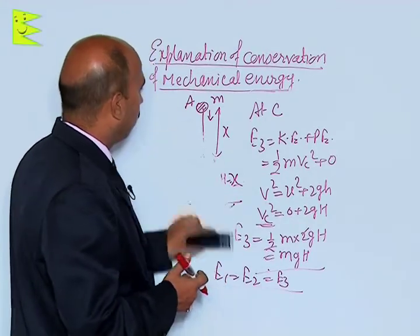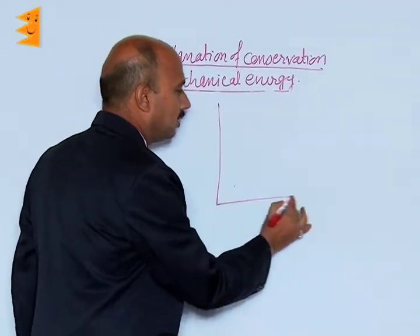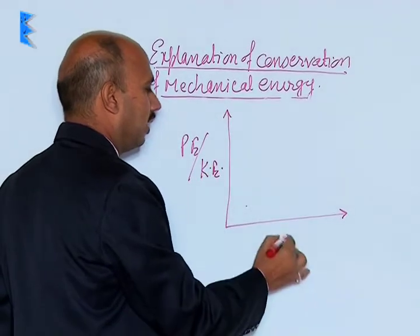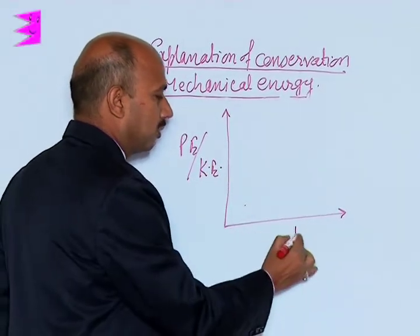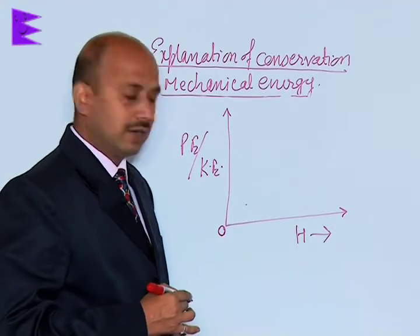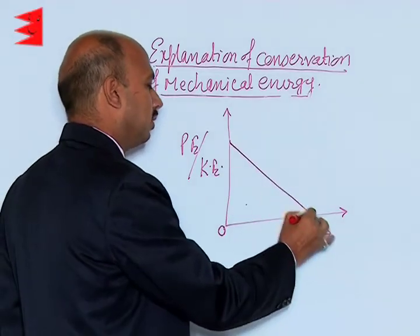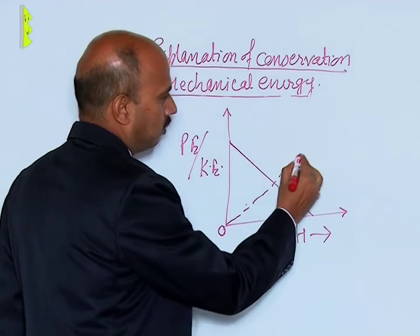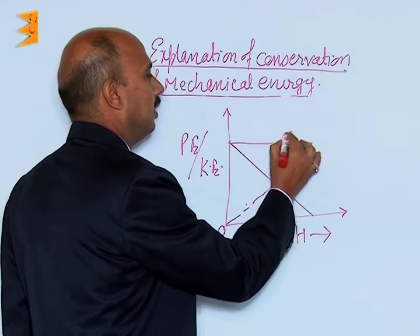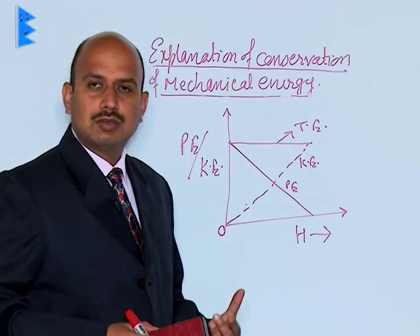We can also show all these variations in kinetic and potential energy with the help of a graph. Taking height H on the x-axis, at point A — the top level — potential energy is maximum and kinetic energy is 0. As height decreases, kinetic energy increases while potential energy decreases, and total energy remains constant throughout. This is the variation of kinetic energy and potential energy with height.